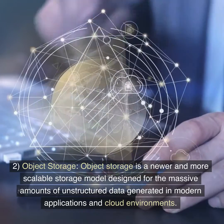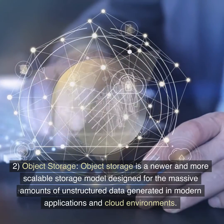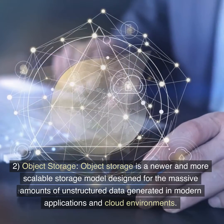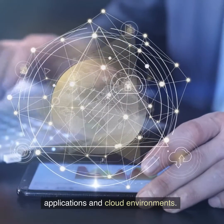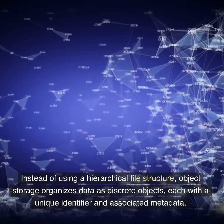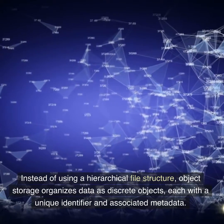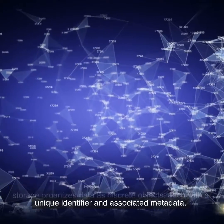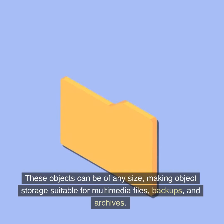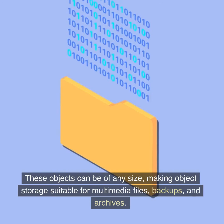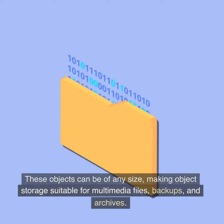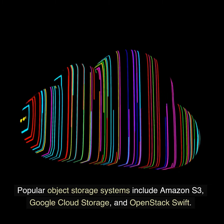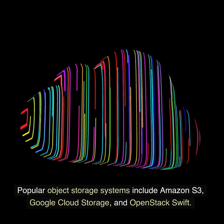Object storage is a newer and more scalable storage model designed for the massive amounts of unstructured data generated in modern applications and cloud environments. Instead of using a hierarchical file structure, object storage organizes data as discrete objects, each with a unique identifier and associated metadata. These objects can be of any size, making object storage suitable for multimedia files, backups, and archives. Popular object storage systems include Amazon S3, Google Cloud Storage, and OpenStack Swift.